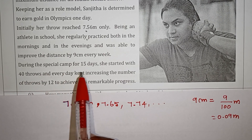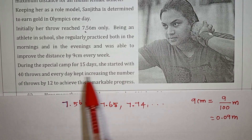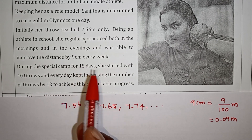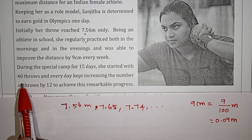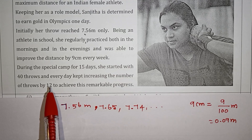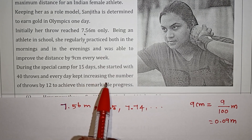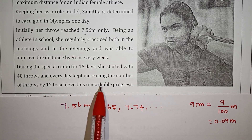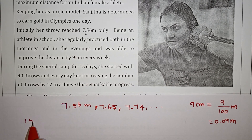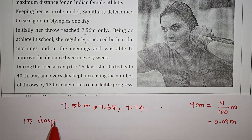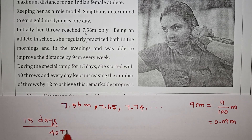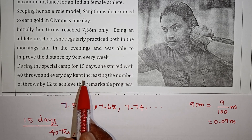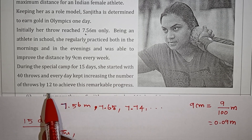During the special camp for 15 days, she started with 40 throws every day. A 15-day camp was conducted. She starts with 40 throws on the first day. Keep increasing the number of throws by 12 to achieve remarkable progress. So in the 15-day camp, the first day she throws 40 times, and the next day she increases by 12 throws.